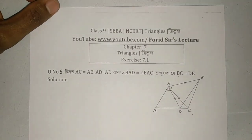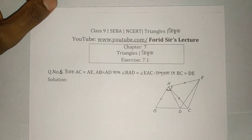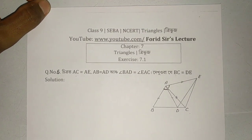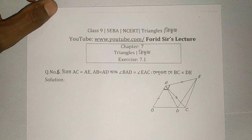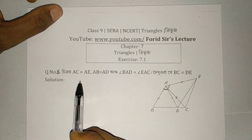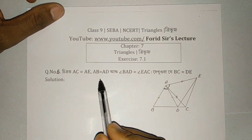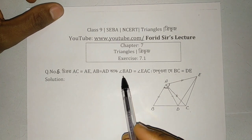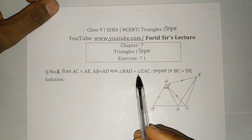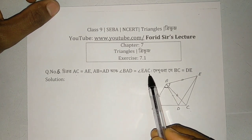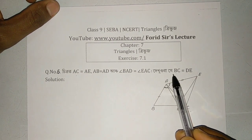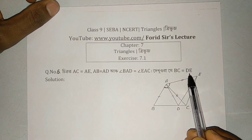Hello everyone, welcome to my channel for each class lecture. I am in Aumad Srinayar Ghanath Bikhar. Exercise 7.1, question number: given that AC equal to AE, AB equal to AD, and angle BAD equal to angle EAC. Show that BC equal to DE.